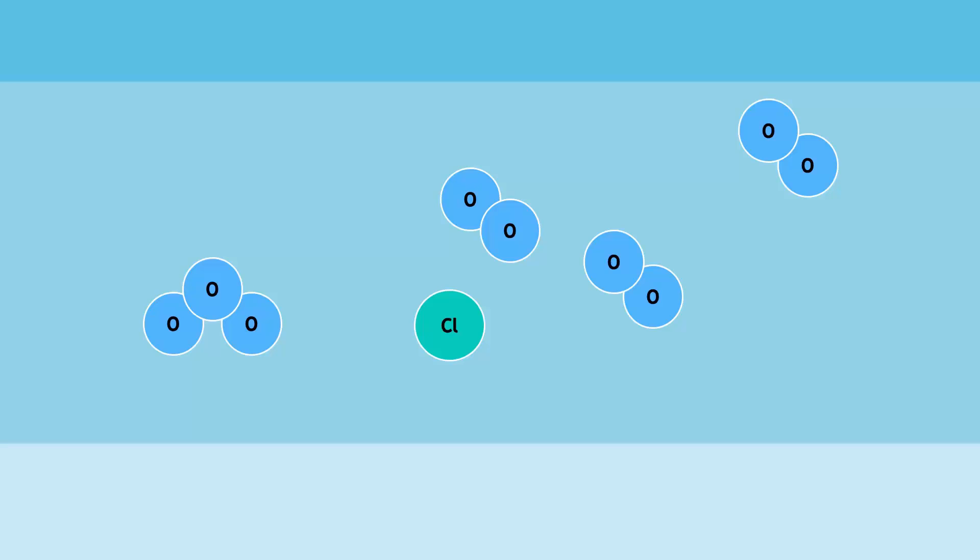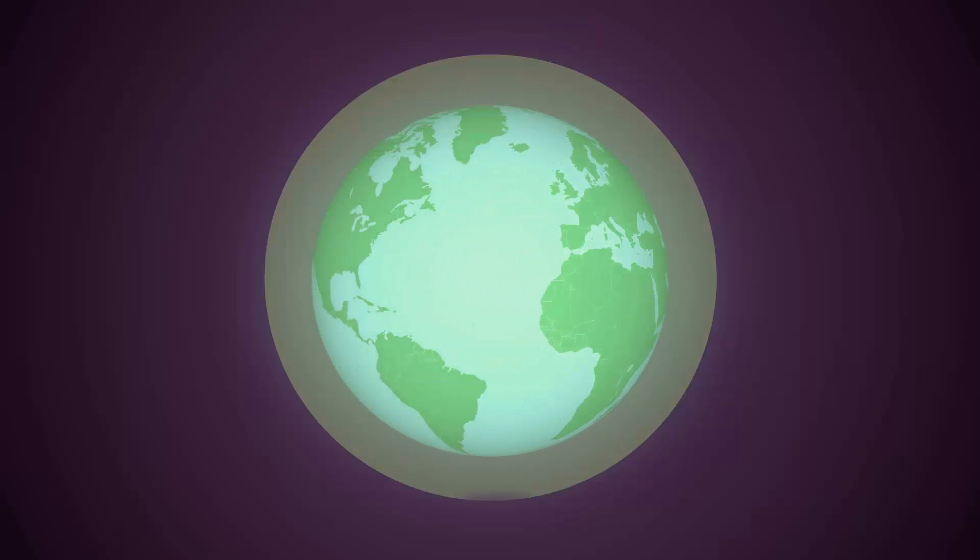The chlorine atom is highly reactive. This results in the thinning of the ozone layer in the atmosphere.